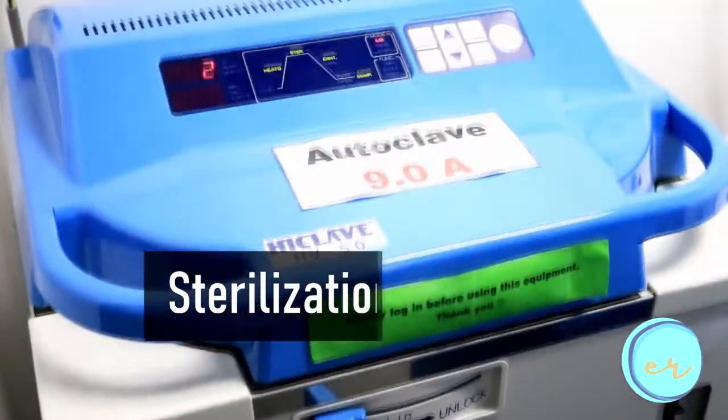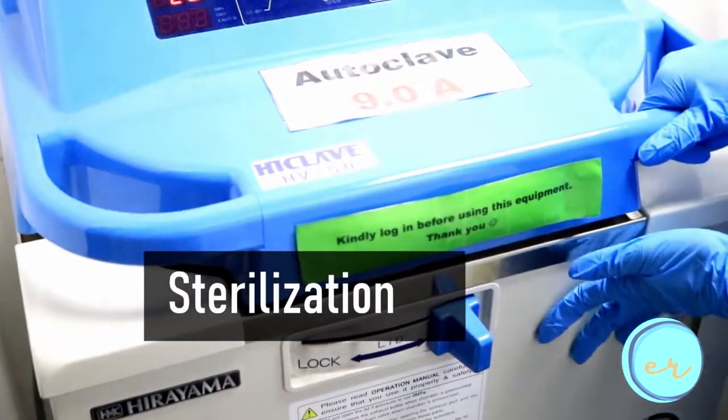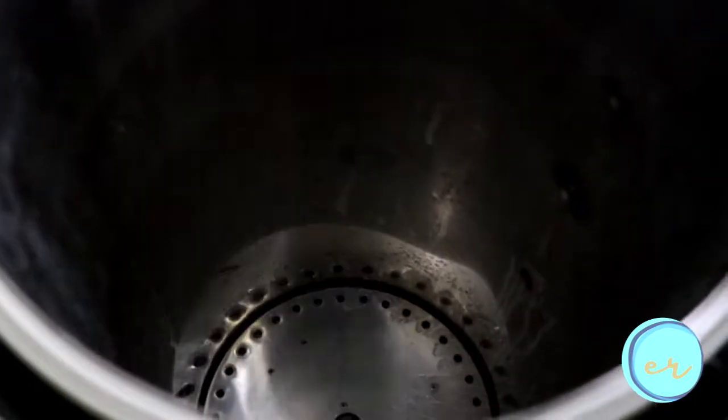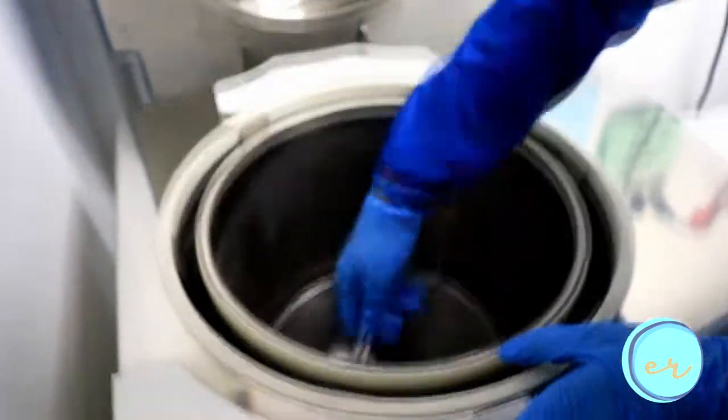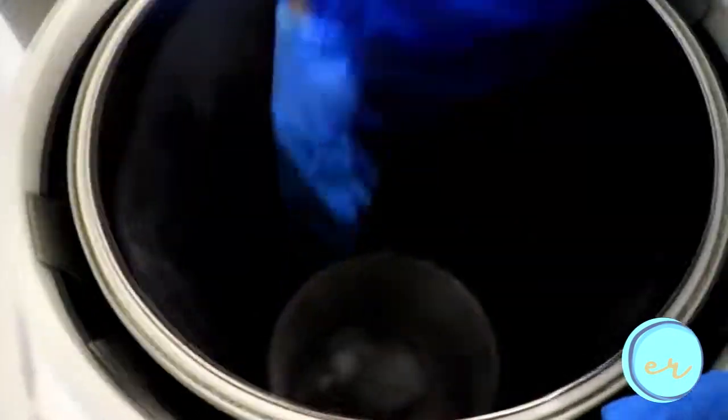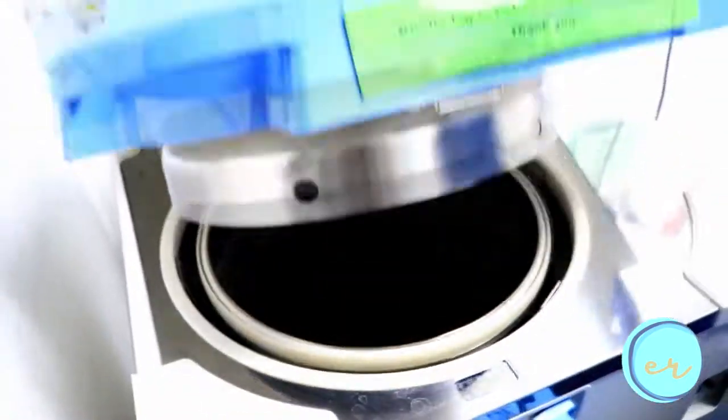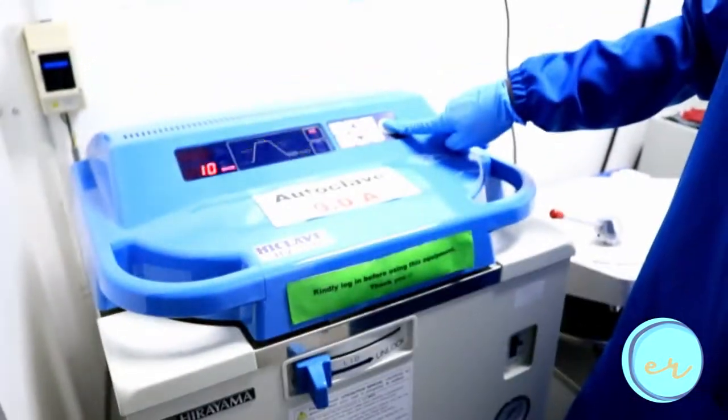Sterilization is required to render a medium or material free of all forms of life. The most useful approach is autoclaving, in which the items are sterilized by exposure to steam at 121 degrees Celsius and 15 psi of pressure for 15 minutes. Modern autoclaves are designed to ensure that all of the air has been expelled and only steam is present in the autoclave chamber.